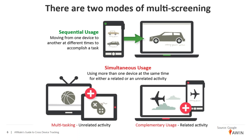Complementary usage is like when you're searching for hotel or airline prices with your desktop open and your phone in your hand while trying to find the best deal. That would be complementary usage. Cross-device tracking focuses on sequential usage, and that's what we're going to be talking about today.